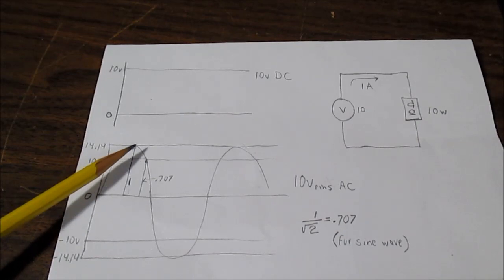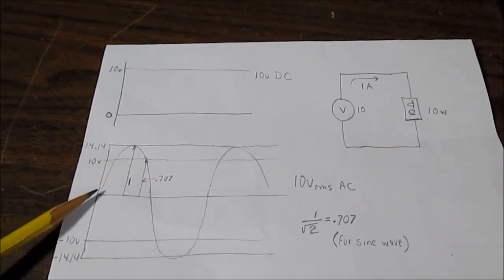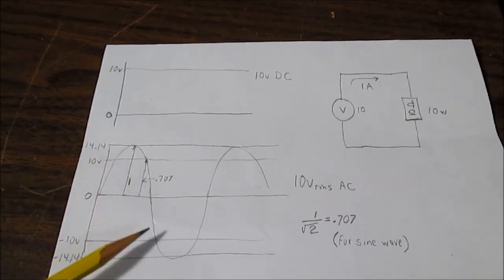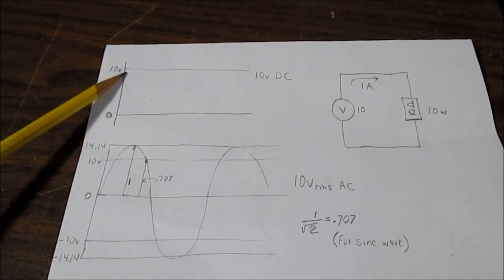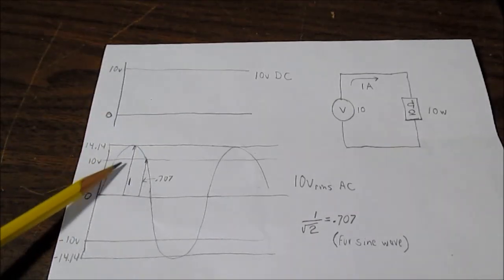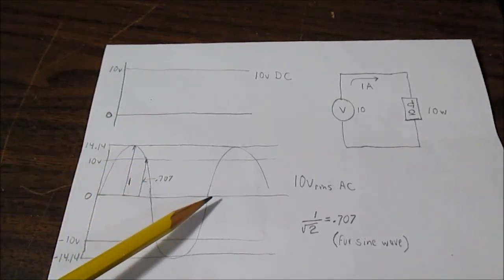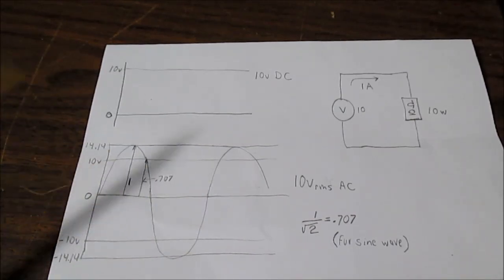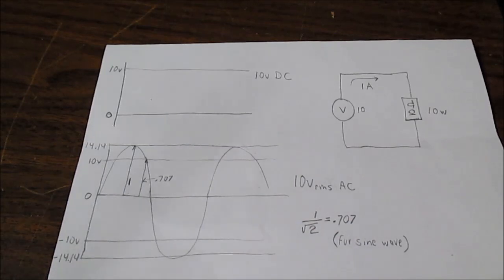So now let's take a look at an AC waveform. As we plot it through time, constantly changing, no longer do we have that nice flat line like we did with DC. If we measure it at any instant point in time, we'll get different voltages.